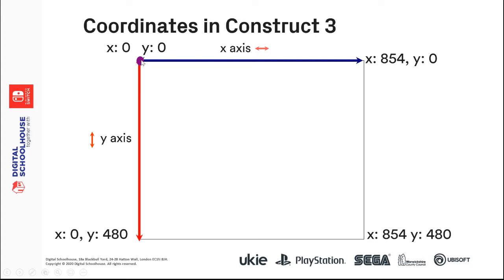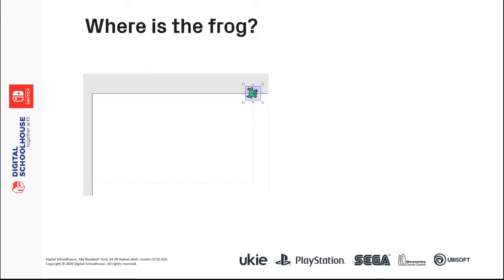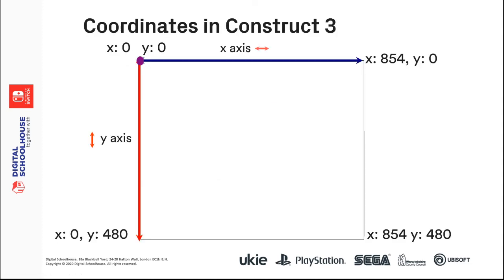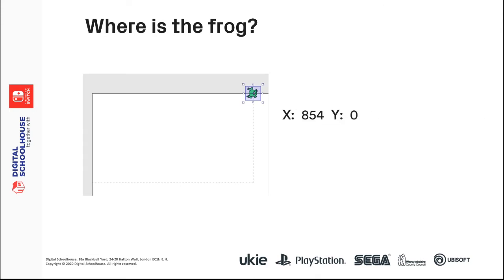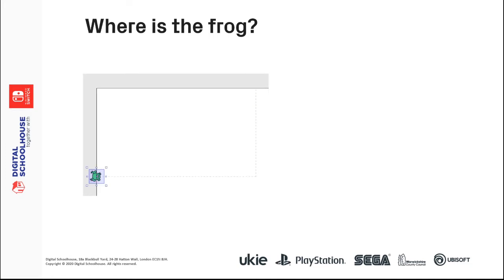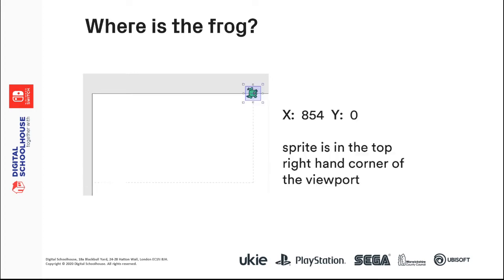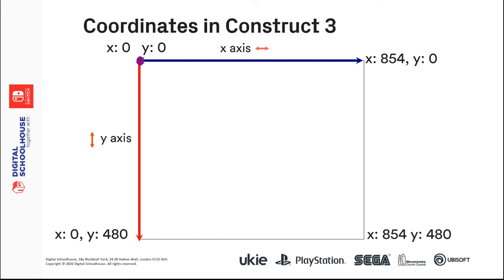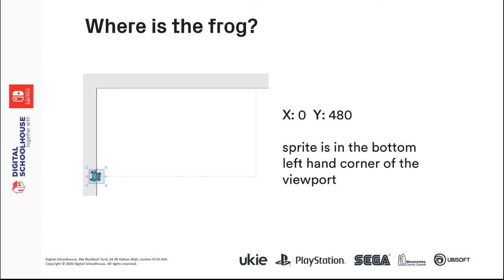We can use coordinates to describe any position on our layout. Where is the frog if you put him right in the top-right corner? He would be at X=854, Y=0. Well done if you got that right! The sprite is in the top-right corner of the viewport. Now — where is the frog's position if he's in the bottom-left? He is at X=0, Y=480, so the sprite is in the bottom-left corner of the viewport.